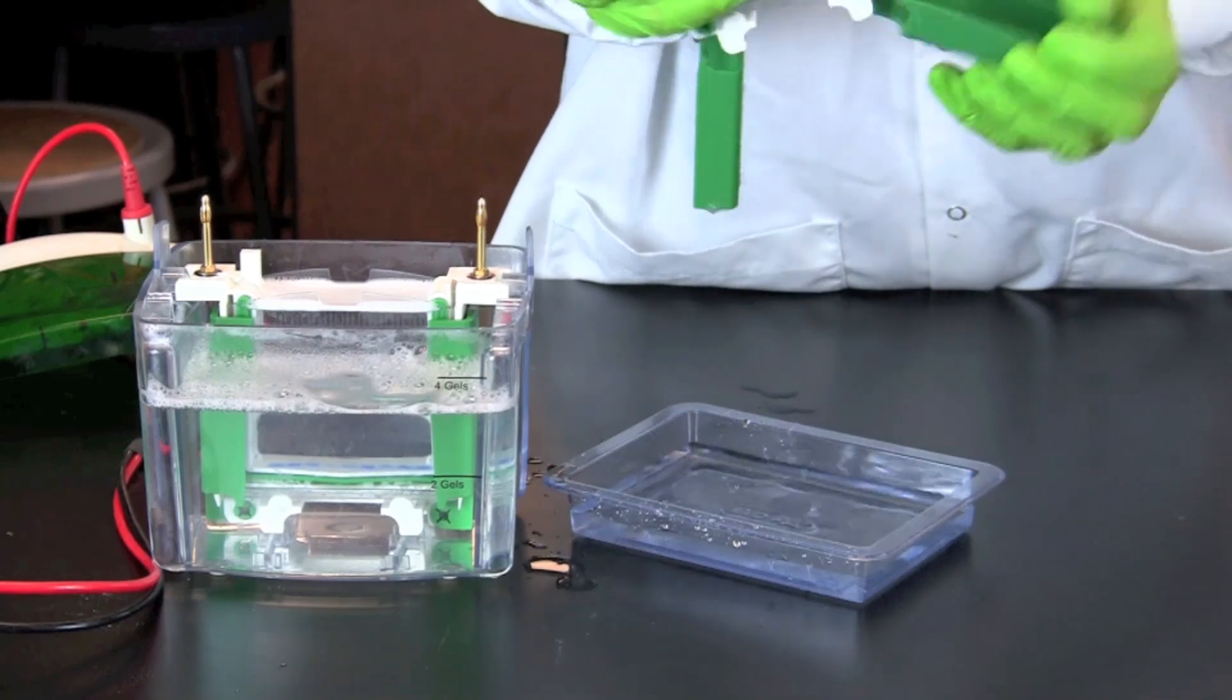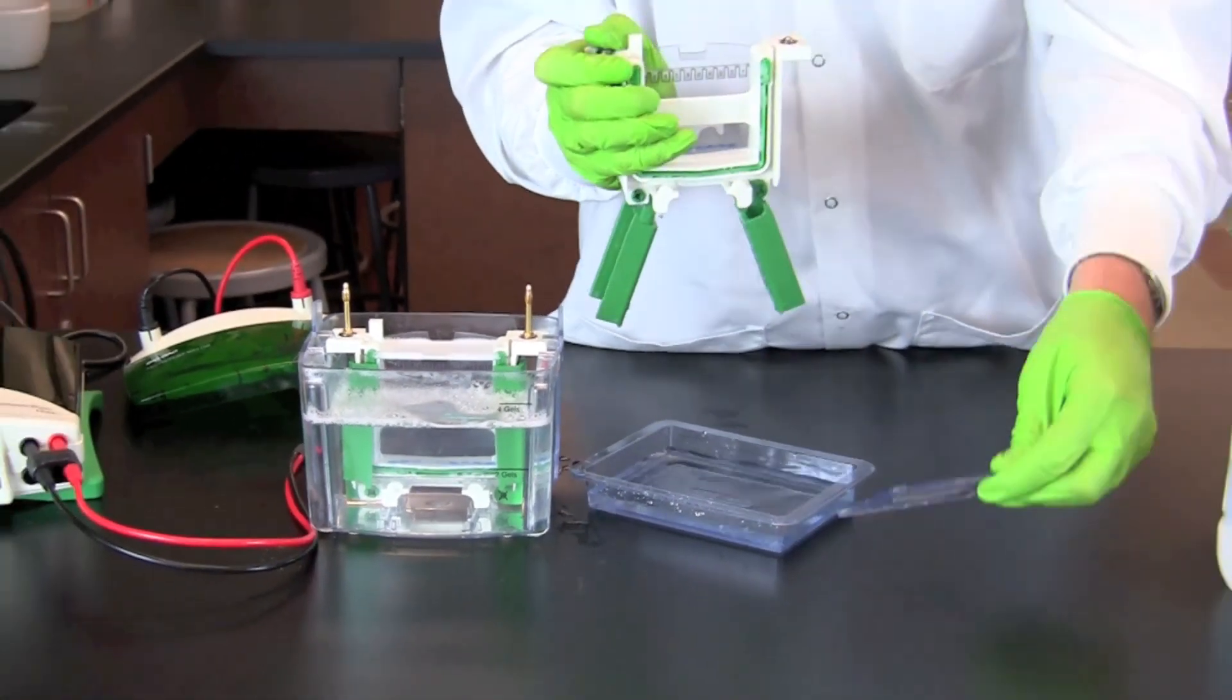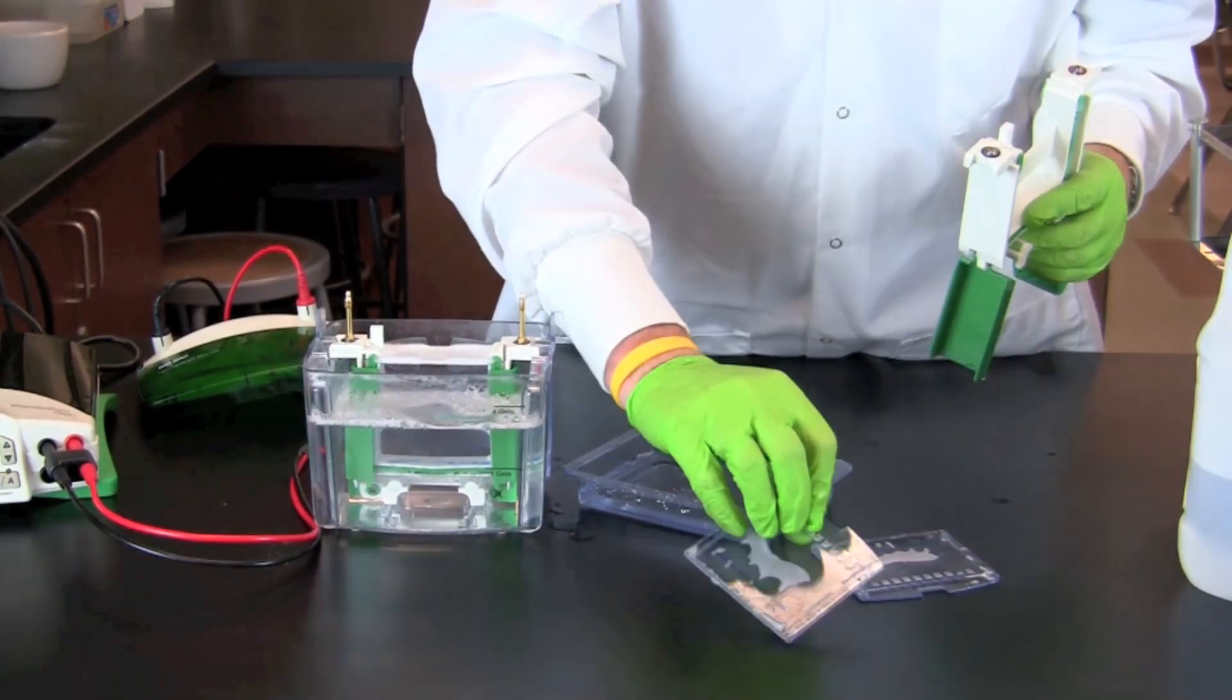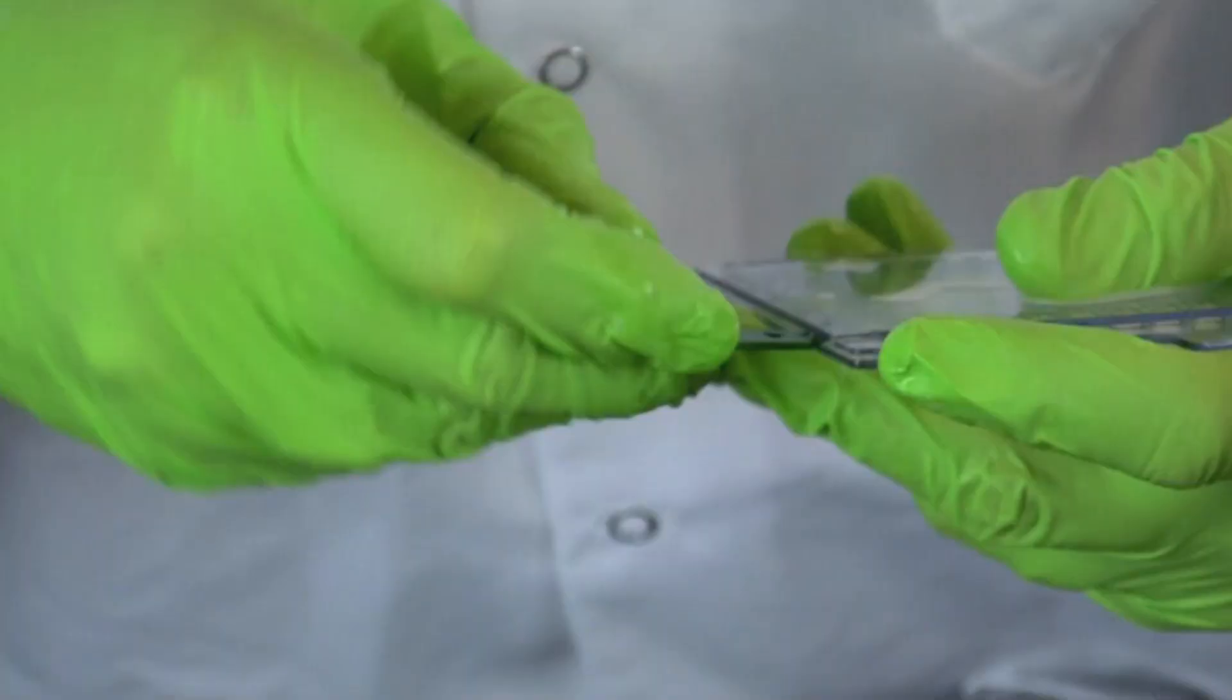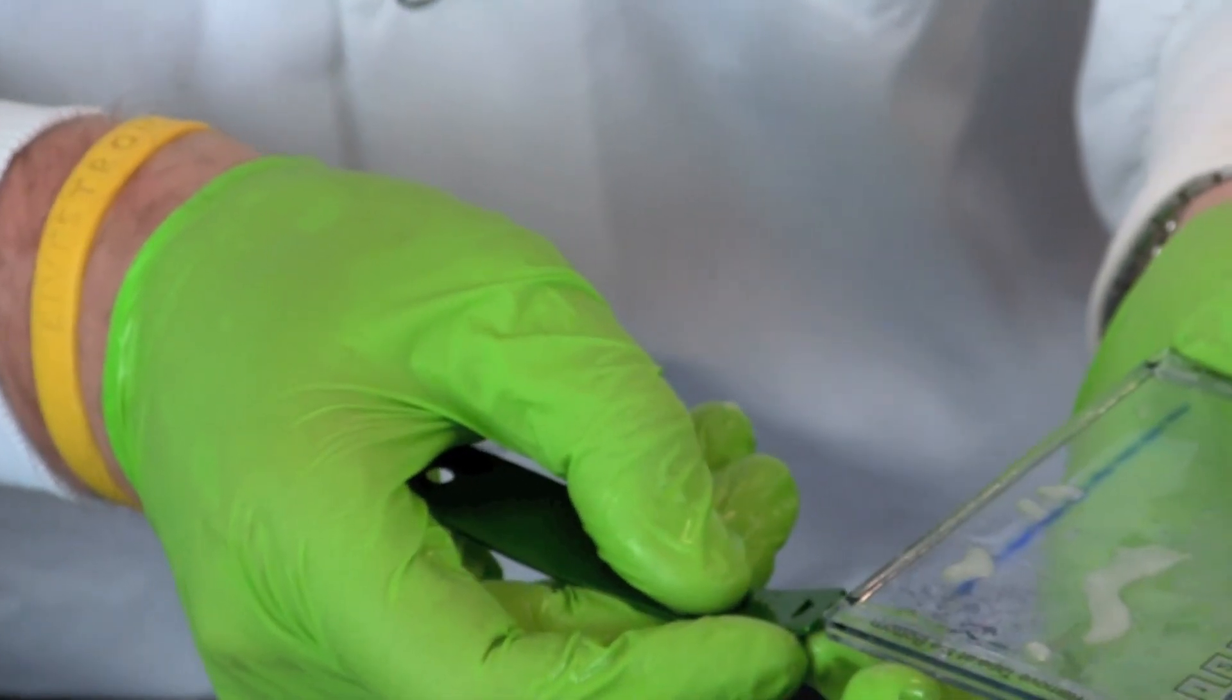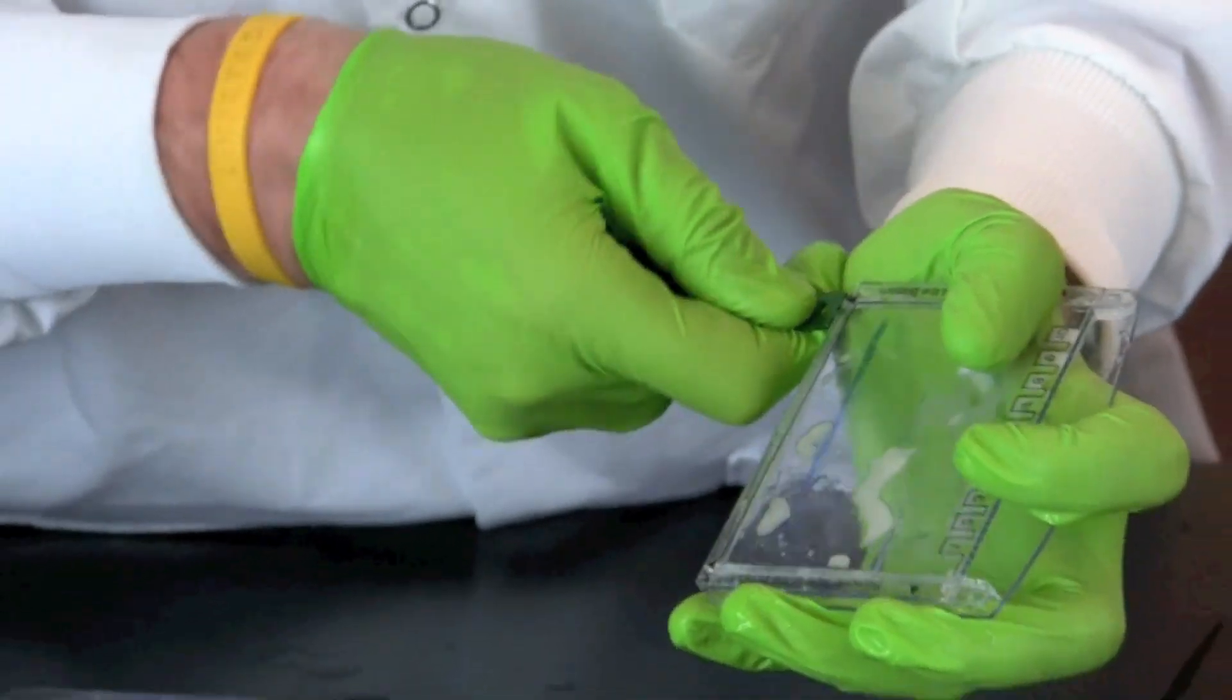Release the green clamps and remove the gel cassette from the electrode assembly. Remove the gel from the gel cassette using the opening key. Line up the arrows on the opening key with the four arrows on the cassette to open the cassette.